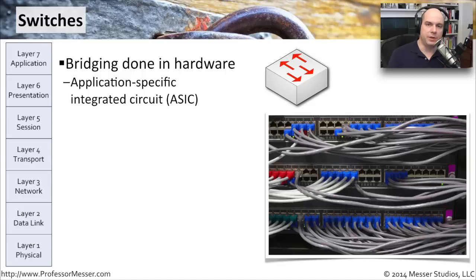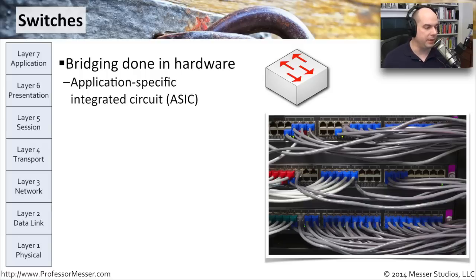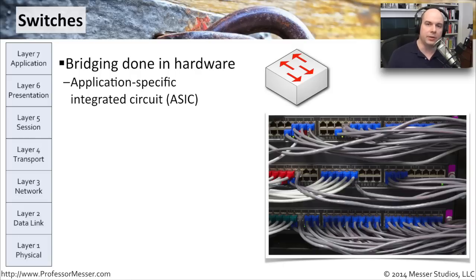Let's start our discussion of these network devices on switches. These switches are really great big bridges. They operate at layer two of the OSI model. I put a representation here of the different layers of the OSI model on the left hand side. We're really talking about layer two primarily in these switches. All of this switching and MAC layer lookup is done in hardware. They're really, really fast.